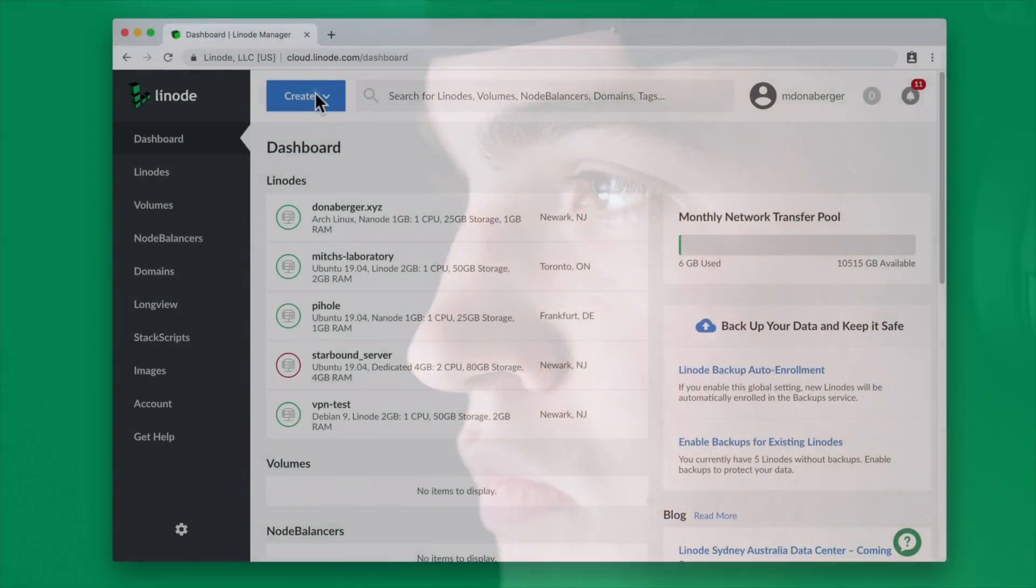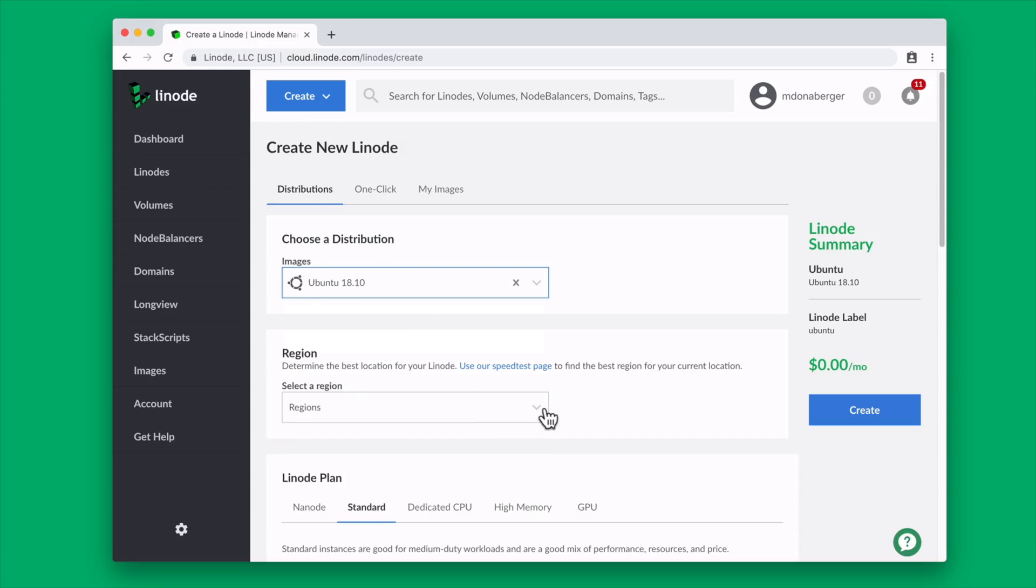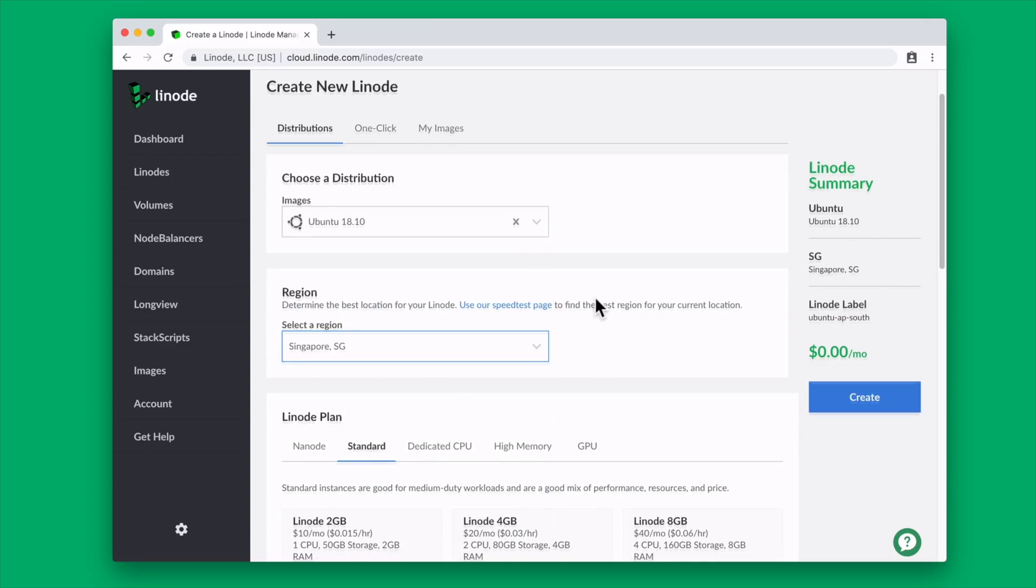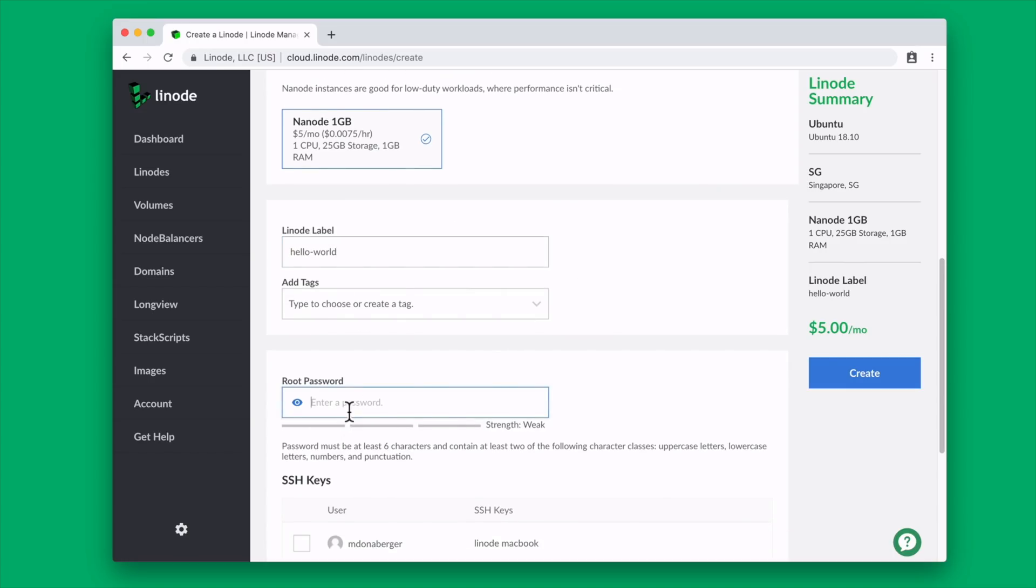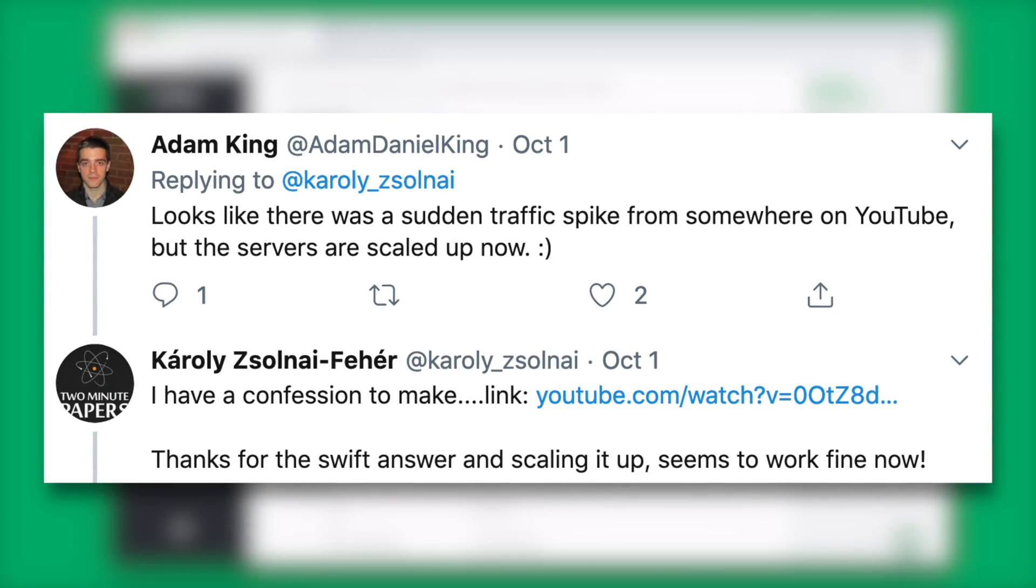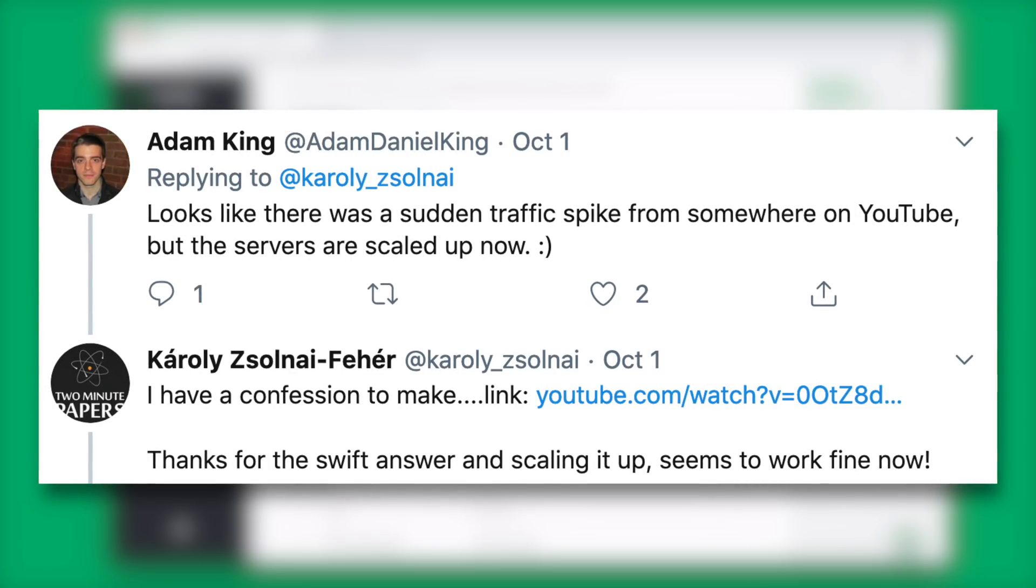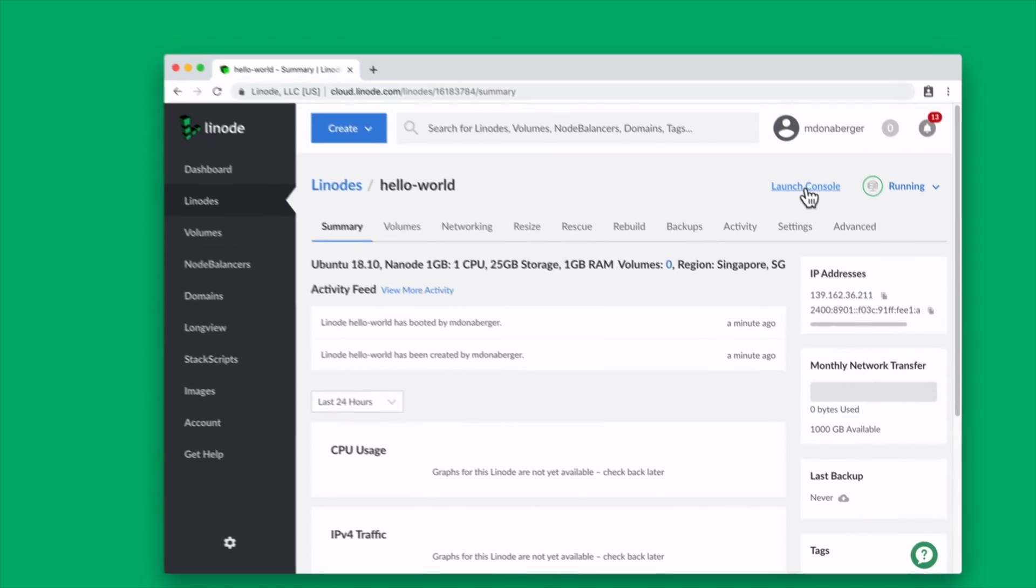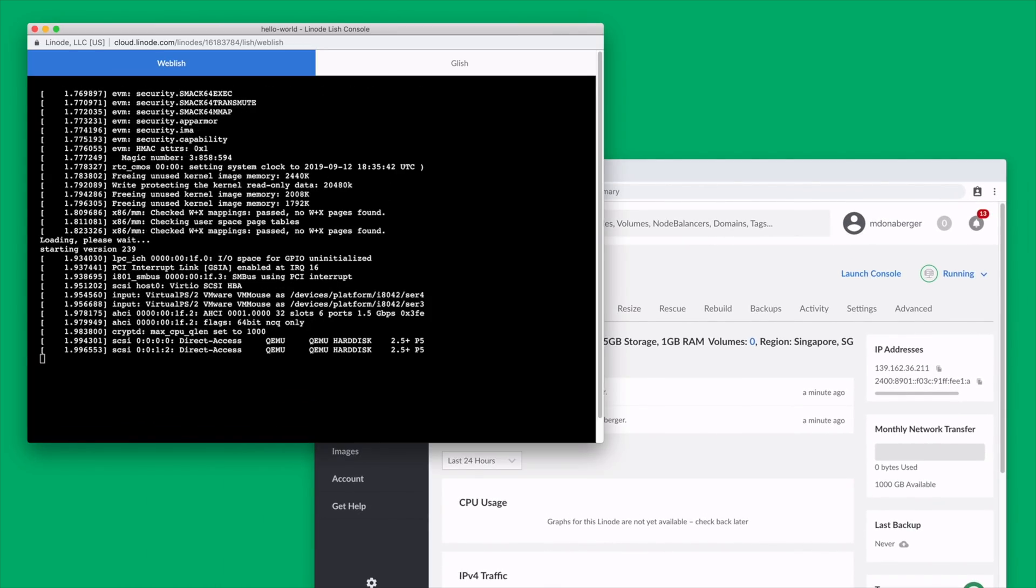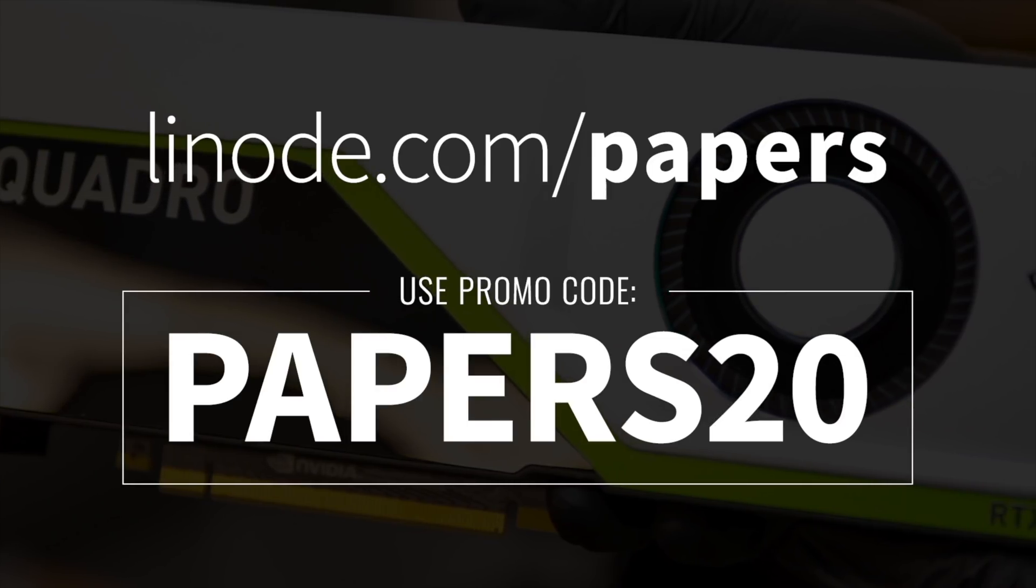This episode has been supported by Linode. Linode is the world's largest independent cloud computing provider. They offer you virtual servers that make it easy and affordable to host your own app, site, project, or anything else in the cloud. Whether you are a Linux expert or just starting to tinker with your own code, Linode will be useful for you. A few episodes ago, we played with an implementation of OpenAI's GPT-2, where our excited viewers accidentally overloaded the system. With Linode's load balancing technology and instances ranging from shared nanodes all the way up to dedicated GPUs, you don't have to worry about your project being overloaded. To get $20 of free credit, make sure to head over to linode.com/papers and sign up today using the promo code PAPERS20. Our thanks to Linode for supporting the series and helping us make better videos for you.